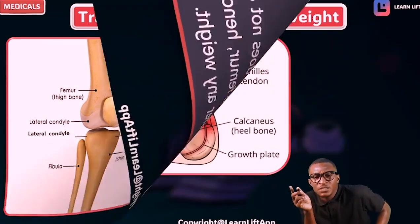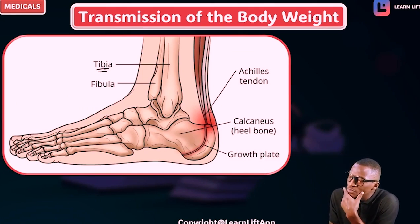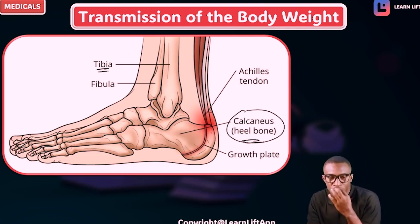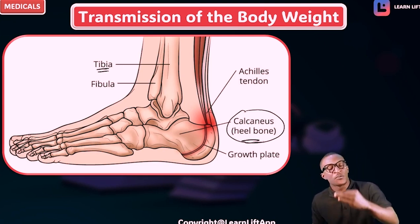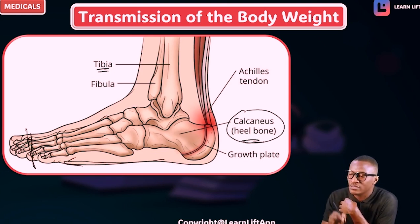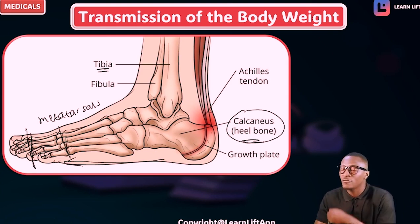From the tibia, how is the weight distributed downward? The weight moves from the tibia down to the heel bone, called the calcaneus. From the calcaneus, the weight is now spread towards the metatarsus — specifically the head of all the metatarsals.